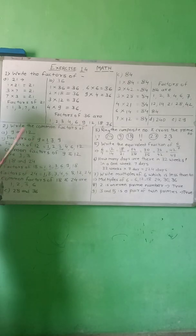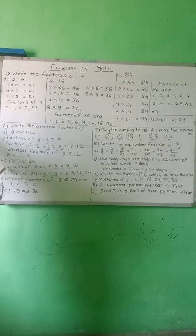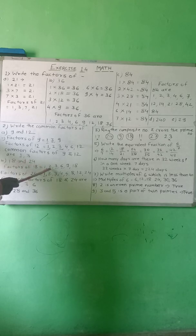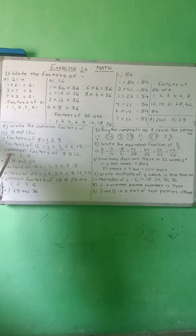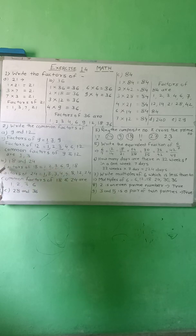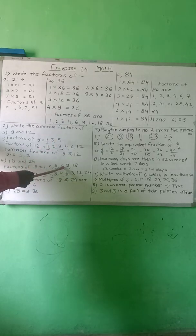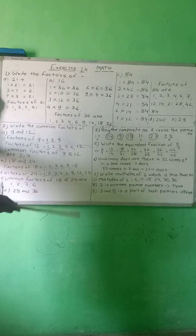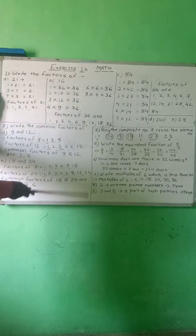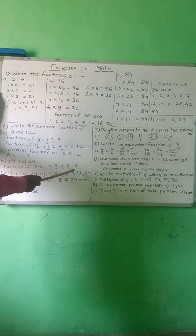Next example: 18 and 24 — follow the same process. First, find out the factors of 18. 1 is a factor of every number. In the 2 times table, 18 is present: 2 times 9 is 18. Then 3 times 6 is 18. Then 6 times 3 is 18. In the 4 times table, 18 is not present, so don't write 4. In 5, also 18 is not present. In 7 or 8, 18 is not present. Take 9: 9 times 2 is 18. And then 18 times 1 is 18.